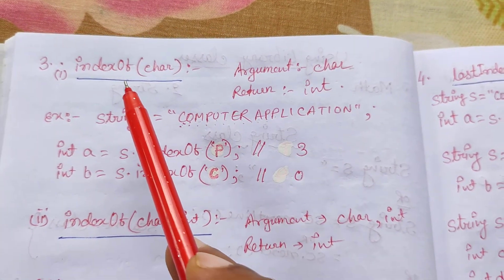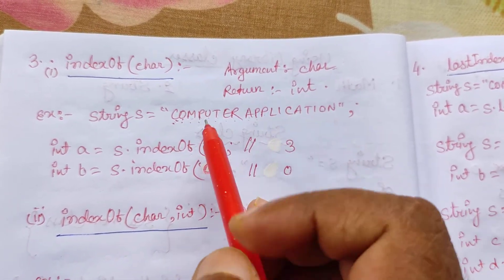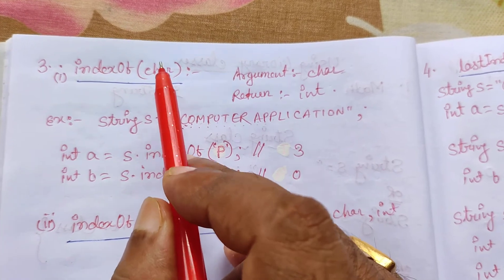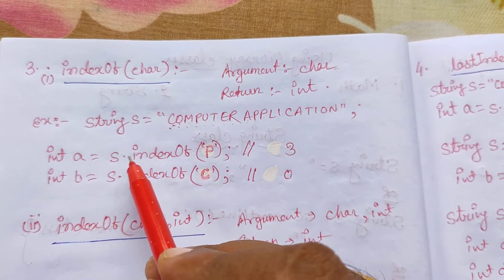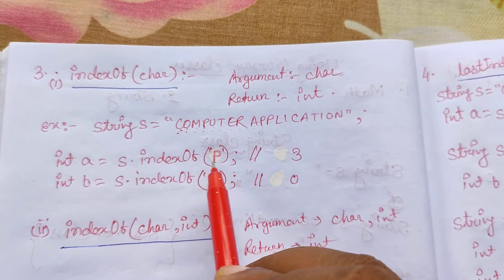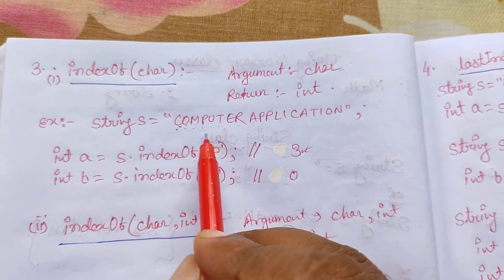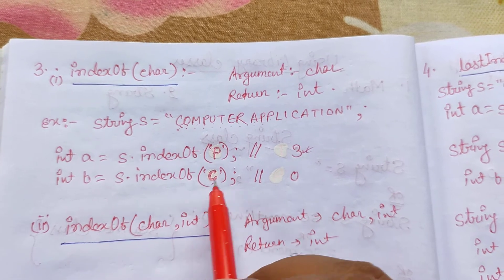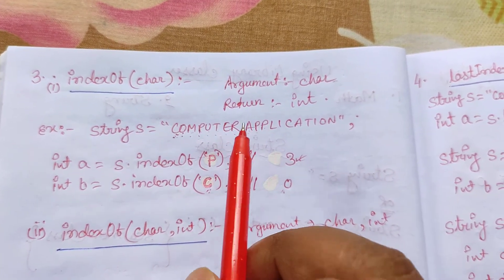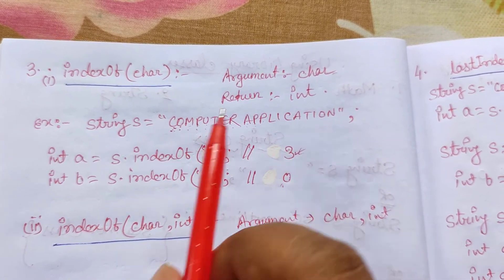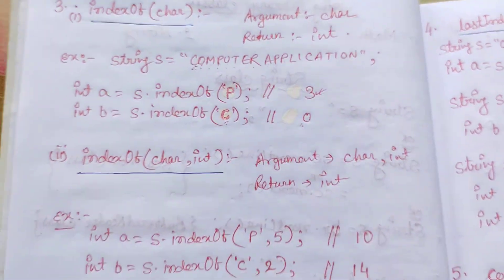Next is indexOf(). We have four different forms. First: indexOf(char) — argument is char, return type is int. It returns the index position where that particular character is first present. Suppose s = "computer application". s.indexOf('p') — p is at third position, so answer is 3. s.indexOf('c') — c is at position 0, so answer is 0. If you give a character like 'z' that is not present, it returns -1 (null/blank result).